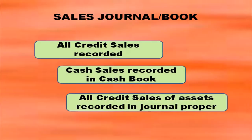Sales journal or sales book: in the sales book all credit sales are recorded, while cash sales are recorded in the cash book. All credit sales of goods are only recorded in the sales book, whereas all credit sales of assets are recorded in the journal proper. So only credit sales of goods go in the sales book; cash sales go in the cash book, and credit sales of assets go in the journal proper.